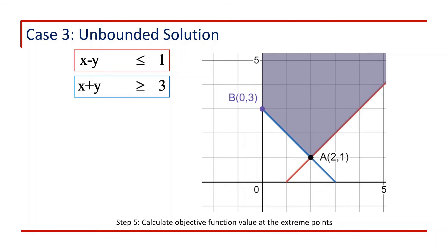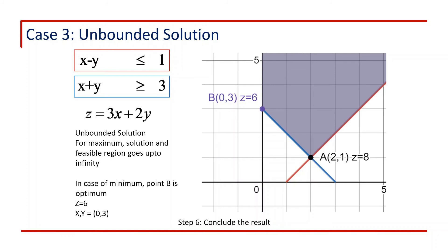Step 5 is to calculate the objective function value. With z equals 3x plus 2y, the value at A is 8 and at B it is 6. Importantly, the value of z at the extreme points at infinity is also infinity. So in Step 6, for a maximization objective, z equals 3x plus 2y is maximum at the extreme point at infinity, and we cannot obtain a definite optimal solution. However, if the same example involves minimization of z, the minimum is at point B, which is the optimal solution.